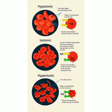These three conditions — hypertonic, isotonic, and hypotonic — indicate different states of the cell. In a hypotonic solution the cell swells up, in isotonic the cell stays the same size, and in hypertonic the cell shrinks.